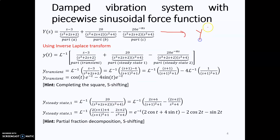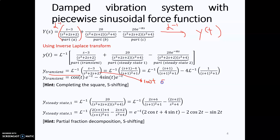Next, we find y(t) from Y(s) using the inverse Laplace transform. Starting with the first part, we need to find the roots of s in the denominator to simplify it. From the calculator, s equals negative 1 plus or minus i, which is a complex number, meaning we cannot use partial fractions. Instead, we use completing the square.